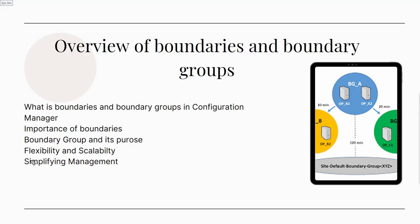In terms of feasibility and scalability, boundary groups provide flexibility and scalability in SCCM deployment by allowing administrators to organize boundaries logically according to their network topology or business requirements. They also enable administrators to define specific content distribution or client communication settings for a defined set of boundaries, optimizing network traffic usage.